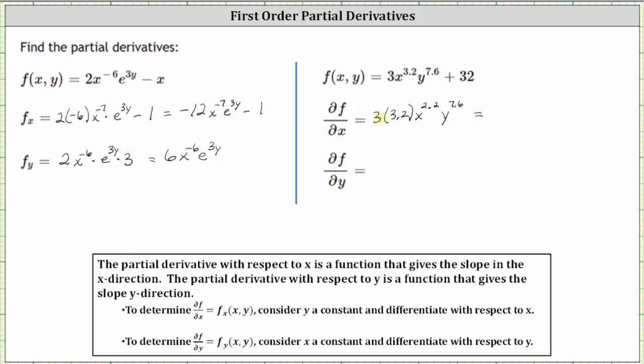Simplifying, three times 3.2 is 9.6, giving us 9.6 x to the power of 2.2, times y to the power of 7.6.